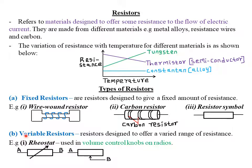The other type of resistor is what we call variable resistors. These are resistors which are designed to offer a varied range of resistance — the amount of resistance they offer can be varied, maybe set to 10 ohm, 20 ohm, or 30 ohm resistance, and so on. An example of a variable resistor is a rheostat, which is usually used in volume control knobs on radios. In an electrical circuit, there are two symbols we use to denote a rheostat.